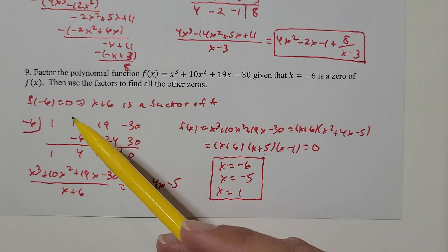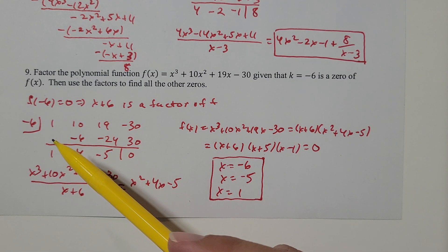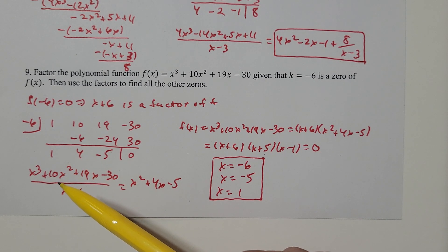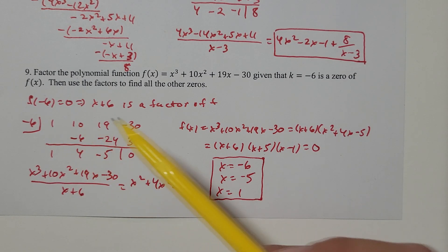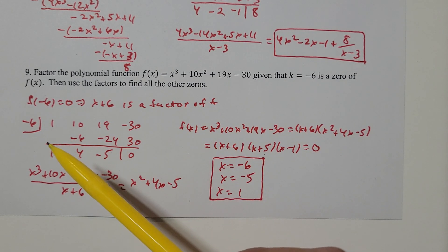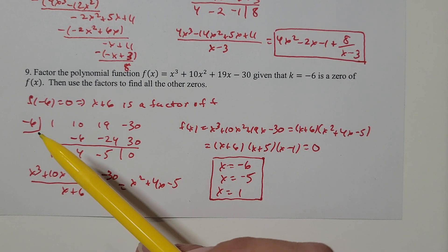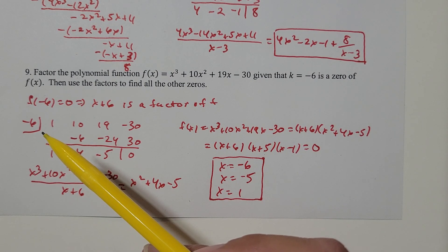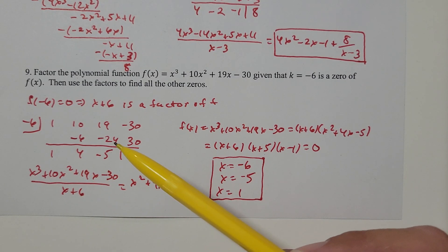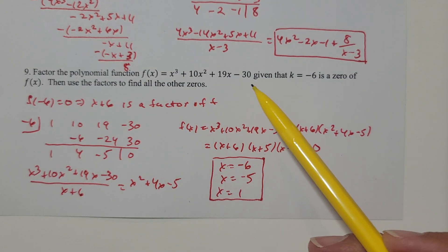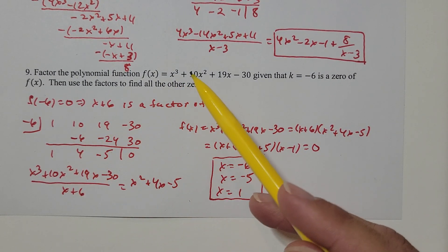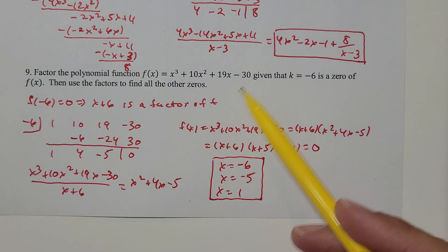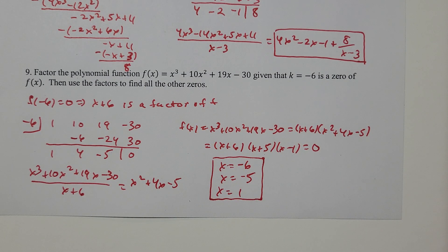Negative six is a zero, so let me use division to factor this further. I'm going to use synthetic division — negative six goes in the upper left-hand corner of the table. Then I'll pick off the coefficients in the top row: 1 in front of x cubed, 10 in front of x squared, 19 in front of x, and negative 30 at the end. And then I'm all set up to divide.